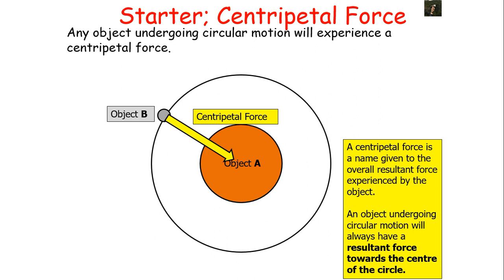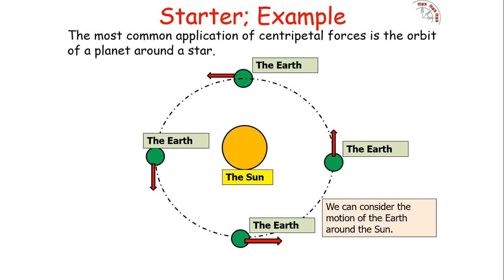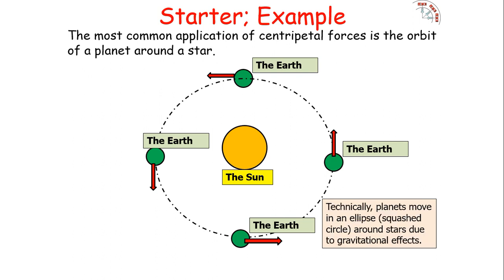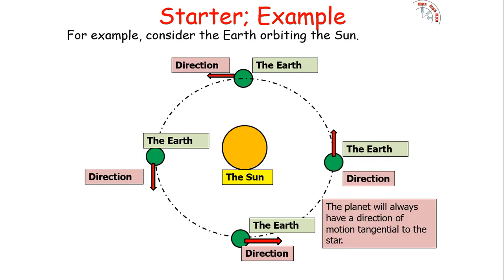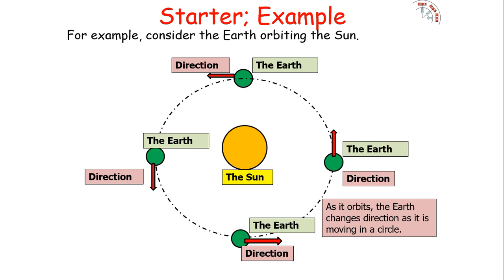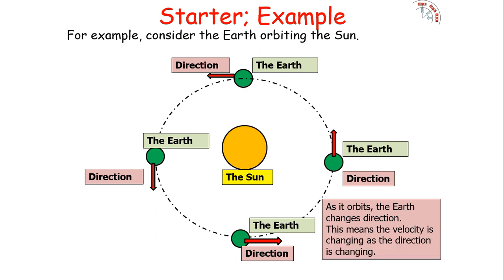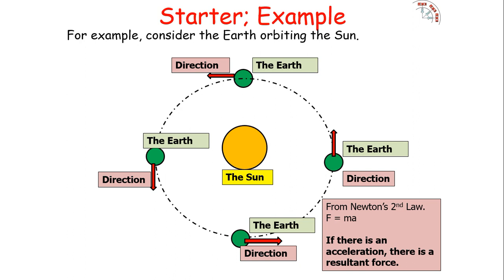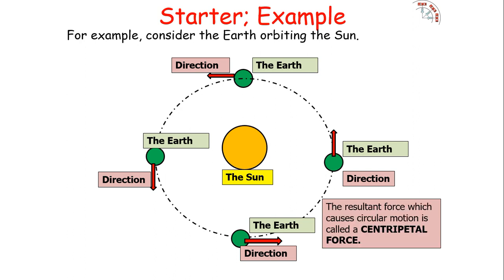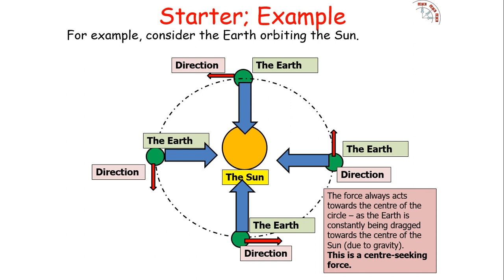The centripetal force always acts towards the centre of the circle. The most common application is the orbit of a planet around a star — let's consider the motion of the Earth around the Sun. Technically, planets move in an ellipse due to various gravitational effects, but let's assume a circular path. The planet always has a direction of motion tangential to the star, and as it orbits the Earth changes its tangential direction, meaning the velocity changes as direction changes, so it is accelerating. From Newton's first law, if there is an acceleration there must be a resultant force — the centripetal force. Centripetal actually means centre-seeking force.